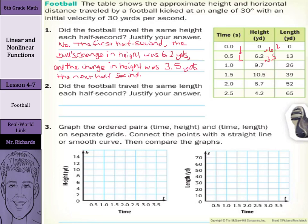Did the football travel the same length each half second? From zero to 13, we increased by 13. From 13 to 26, we increased by 13. Keep looking — we increased by 13 there, another 13 between 39 and 52, and another 13 between 52 and 65. So was our rate of change the same? Yes.